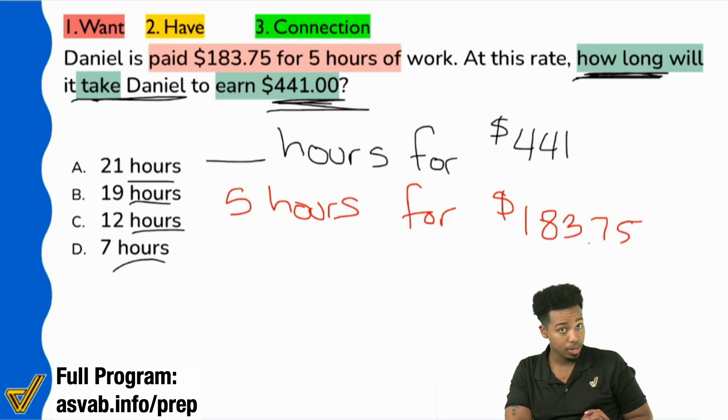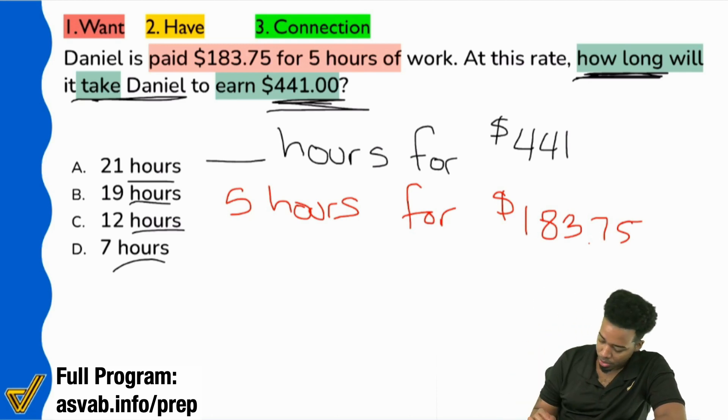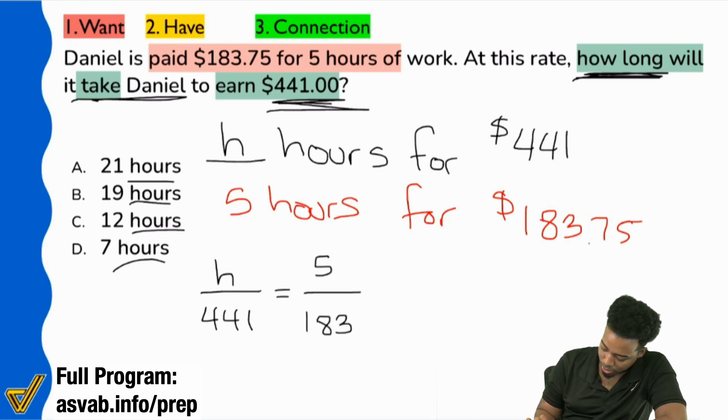Hours first on both. Hours, hours, money, money. Is this a little better? Does this help us understand the right way to do it? Excellent. So with that said, the next step that we'll take is we're simply going to set up a proportion, solve it and be done. So here we go. We'll set this up. We'll say H for hours right over here. So we'll have H over 441 equals 5 hours over 183.75.